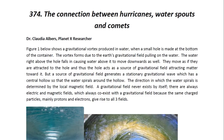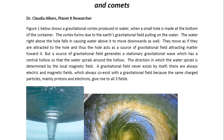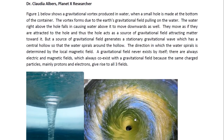Figure one below shows a gravitational vortex produced in water when a small hole is made at the bottom of the container. The vortex forms due to the Earth's gravitational field pulling on the water. The water right above the hole falls in, causing water above it to move downwards as well. They move as if they are attracted to the hole, and thus the hole acts as a source of gravitational field, attracting matter toward it. But a source of gravitational field generates a stationary gravitational wave, which has a central hollow, so that the water spirals around the hollow.